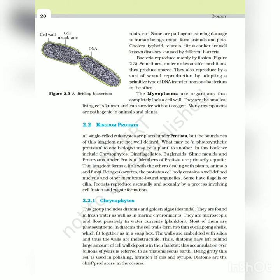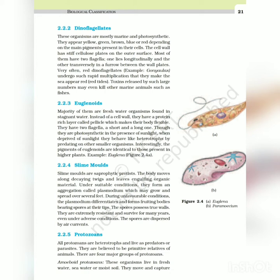Dinoflagellates - these organisms are mostly marine and photosynthetic. They appear yellow, green, brown, blue or red depending on the main pigments present in their cells. The cell wall has stiff cellulose plates on the outer surface. Most of them have two flagella - one lies longitudinally and the other transversely in a furrow between the wall plates. Very often, red dinoflagellates, example Gonyaulax, undergo such rapid multiplication that they make the sea appear red - red tides. Toxins released by such large numbers may even kill other marine animals such as fishes.